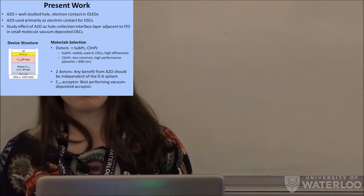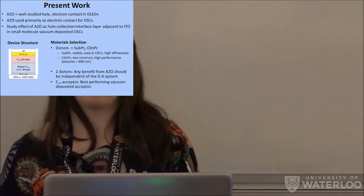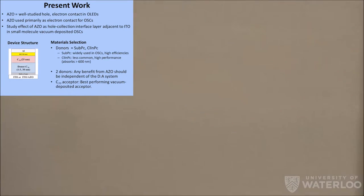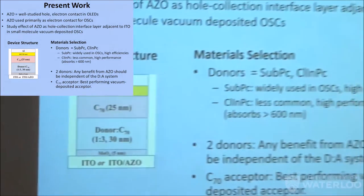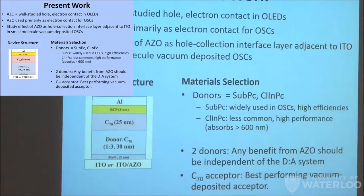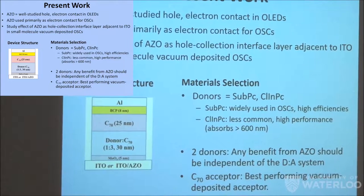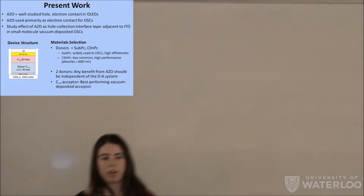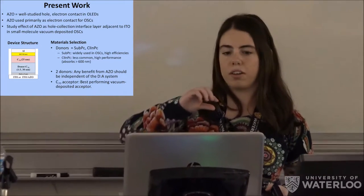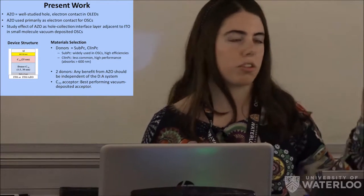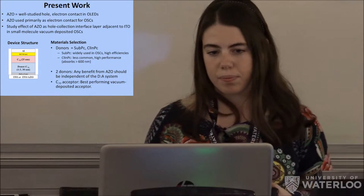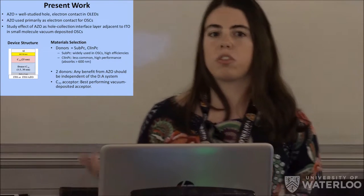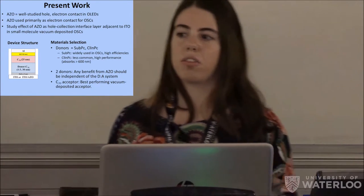So now to get down to the present work. Azo is a very well-studied hole and electron contact in organic LEDs. You guys probably heard Professor Bulovic talking a little bit about OLEDs earlier. Also, it's used, it has been used extensively as an electron contact in organic solar cells. However, it hasn't been used as a hole collection contact. So we thought it would be interesting to study the effect of azo as an interface layer between ITO and our hole extraction layer, which in this case is molybdenum trioxide, as you see here. And see what the effect might be on photostability, because interface layers traditionally do significantly enhance photostability in the literature.